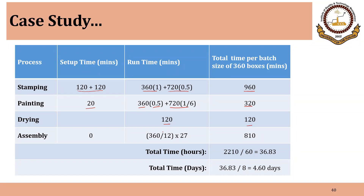Assembly requires 27 minutes, and each worker actually assembles 30 parts because there are 12 workers total, so each will have 30 parts to assemble. So 360 divided by 12, into 27, is 810 minutes. All these times are in minutes.